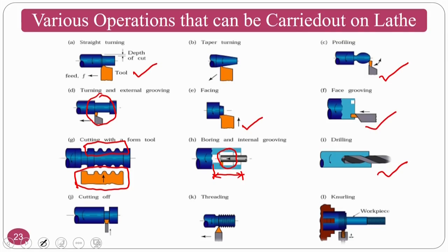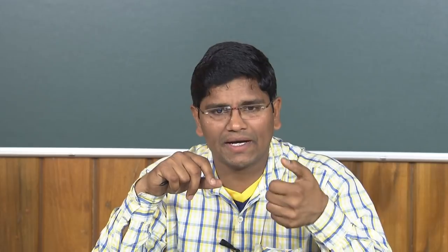Other lathe operations include cut-off to separate the product after machining, threading to generate different types of threads — commonly V-type threads — and knurling, which is the imposition of diamond cone patterns or many other patterns on the workpiece to help with proper gripping.